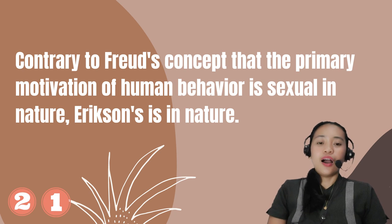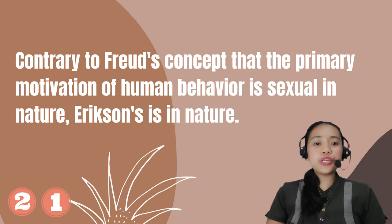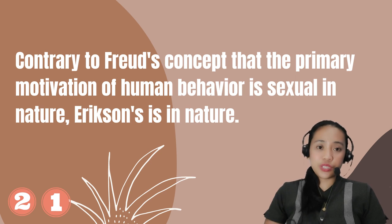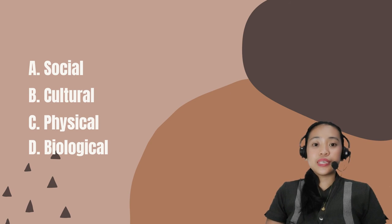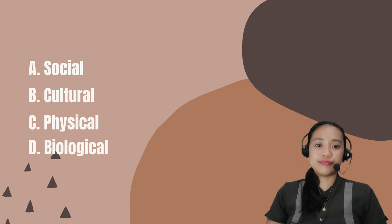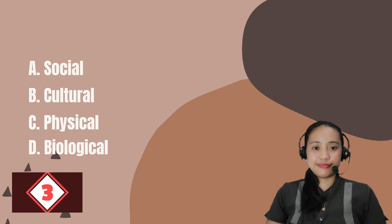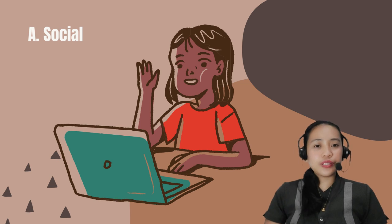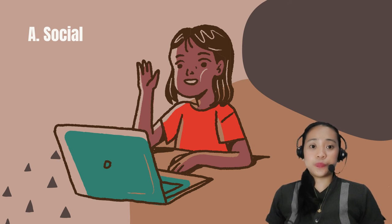Number 21. Contrary to Freud's concept that the primary motivation of human behavior is sexual in nature, Erikson's theory is social in nature. This is the reason why Erikson called his theory the psychosocial theory.